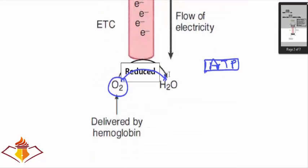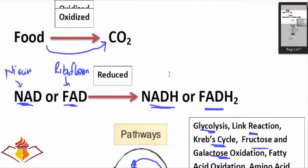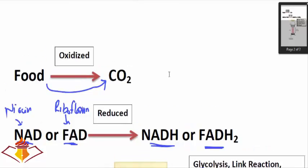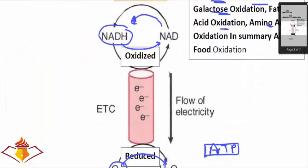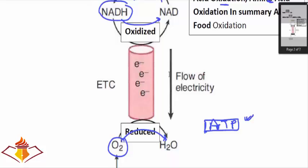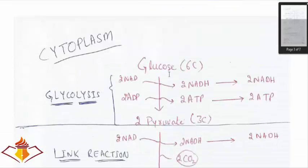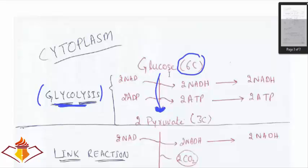So the whole story is: food is oxidized to CO₂, NAD and FAD are reduced to NADH and FADH₂, and when NADH and FADH₂ are oxidized back, they reduce oxygen to water, producing ATP via the electron transport chain. In the cell, the major pathway happening in the cytoplasm is glycolysis — the oxidation of glucose to pyruvate.